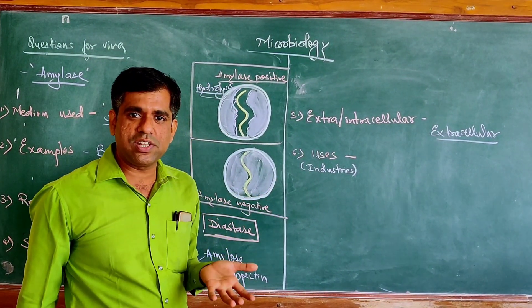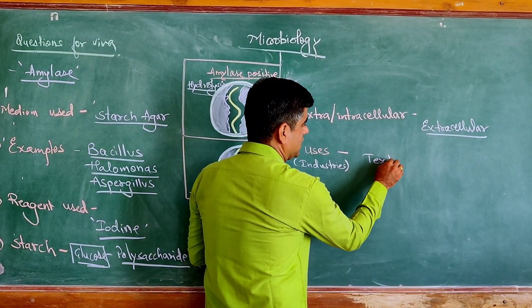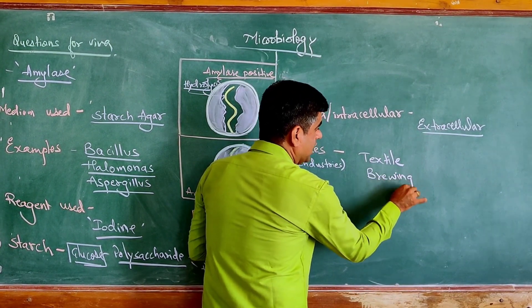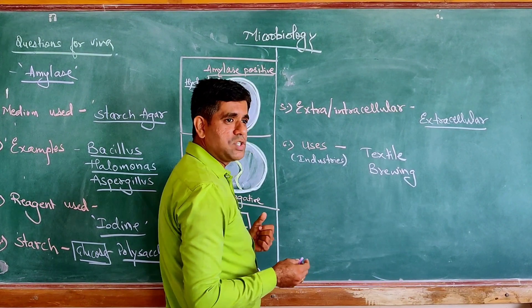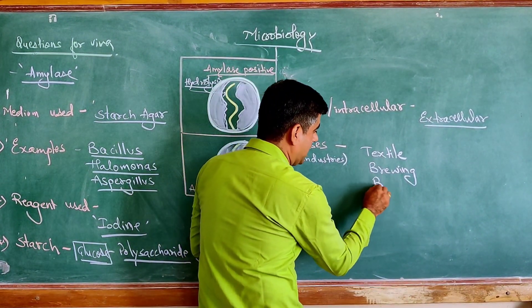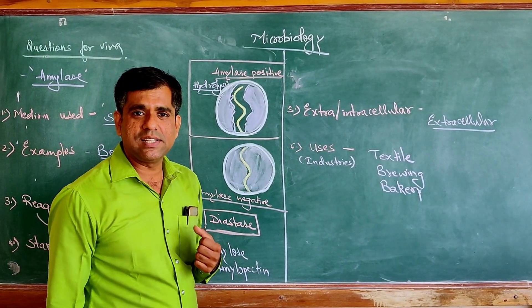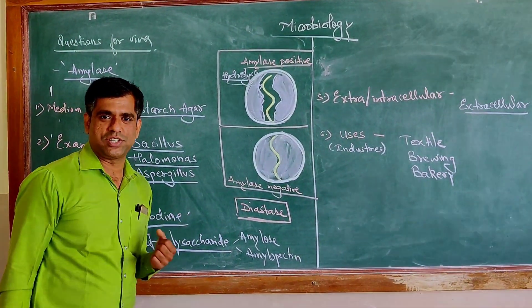What are the uses or which industries will find the use of this particular amylase? You can find use of this particular amylase in textile industry, brewing industry, confectionaries, bakeries, even in waste handling. This particular amylase finds wide applications. Stay tuned with us for more such questions. Thank you.